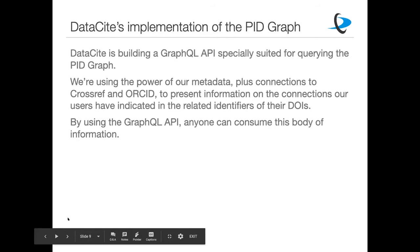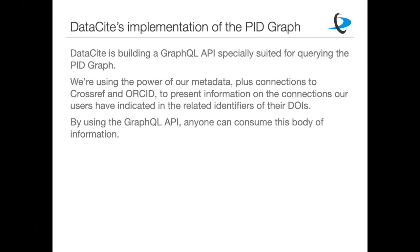Let's talk about DataCite's implementation of the PID Graph. We are building a GraphQL API specifically suited for querying the PID Graph. We're using the power of our metadata plus connections to Crossref and ORCID to present information on the connections our users have indicated in the related identifiers of their DOIs. By using this GraphQL API, anybody can then consume this body of information that we are making available through the power of connected metadata.